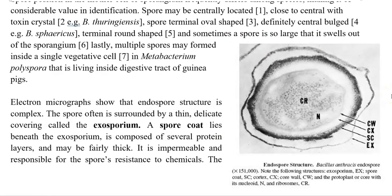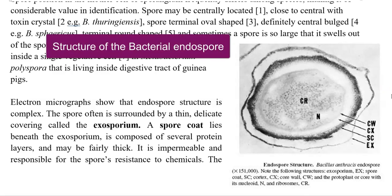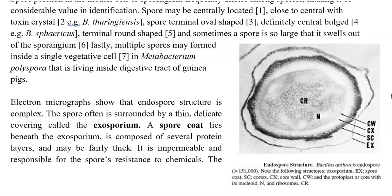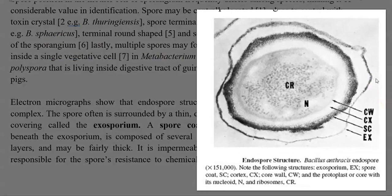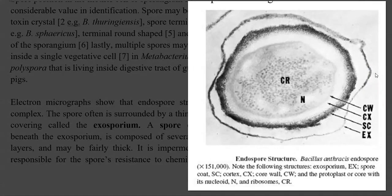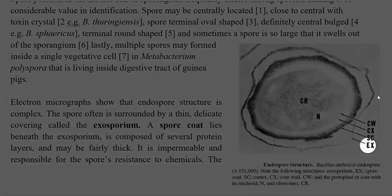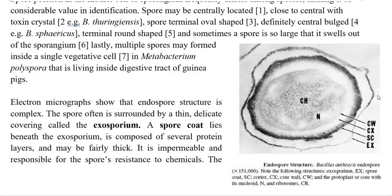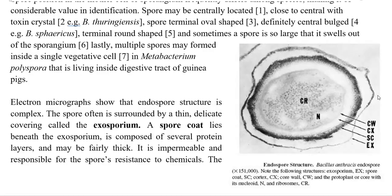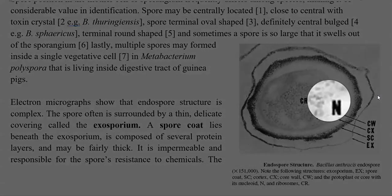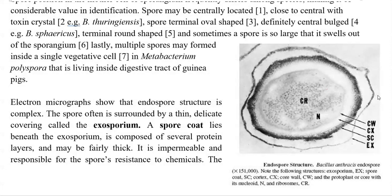Next we look at the structure of the spore. When an adverse condition arises, the vegetative cell is changed into a spore cell. A Bacillus anthracis endospore structure has been depicted. From the outermost region, the exosporium is outermost to the spore, followed by the spore coat, then the cortex of the spore, and finally the core wall. Inside the core wall you can find the protoplast, which is composed of a nucleoid as well as core ribosomes.